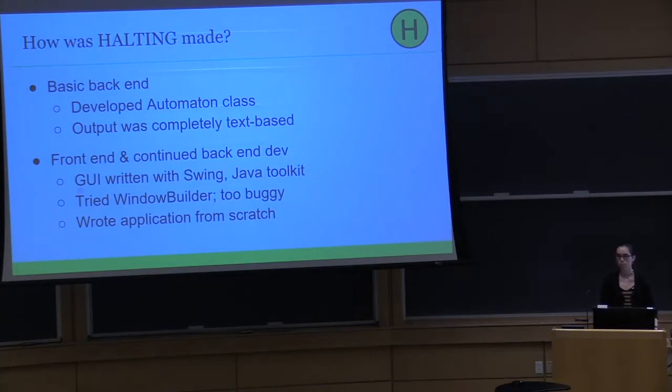So then I moved on to the real bulk of the project, which was building the front end, connecting that to the backend, and continuing to develop features. I wrote the GUI using the Java toolkit Swing, and originally I tried out this Eclipse plugin called Window Builder, which is a graphical GUI designer. Window Builder is a GUI that lets you graphically design the components of your desired GUI, and then it generates Java code for you, just the skeleton code to produce the GUI. But unfortunately, it was pretty buggy on my machine. I couldn't really get it to work, so I abandoned that idea and soon just decided to write everything from scratch.